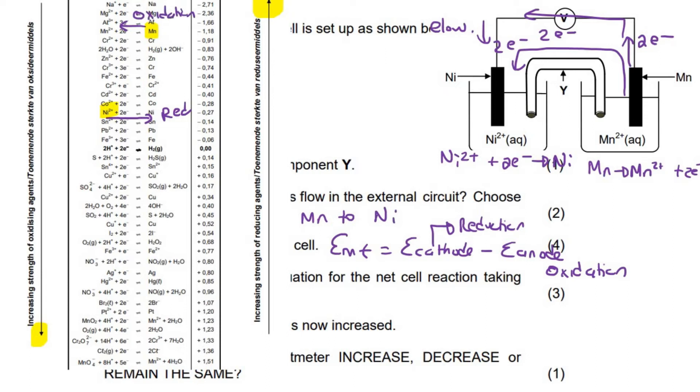So your EMF is equal to the reduction value. So the reduction value is negative 0.27 minus your oxidation value, which is negative 1.18. So you're just going to say negative 1.18. And if you calculate this, you end up with 0.91 volts.